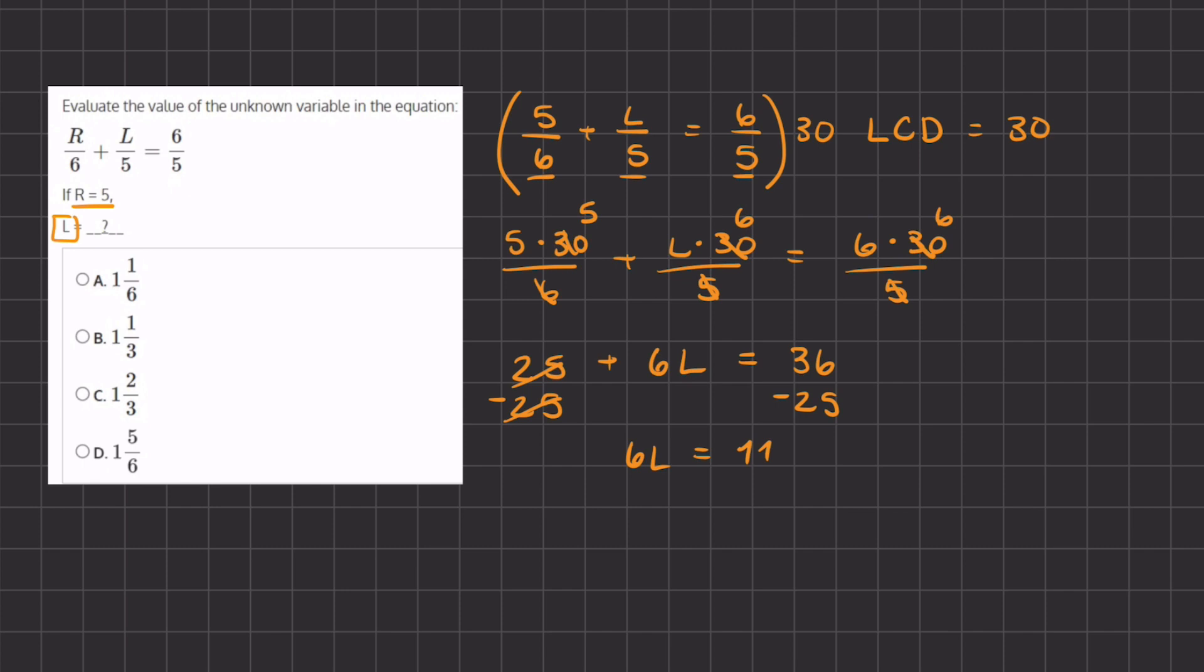So now we want to isolate this l, and we are going to do so by dividing 6 on both sides. And so now we have l is equal to 11 divided by 6.